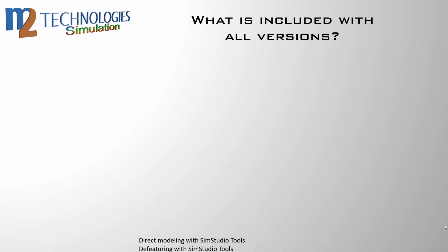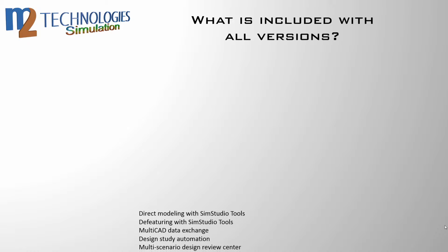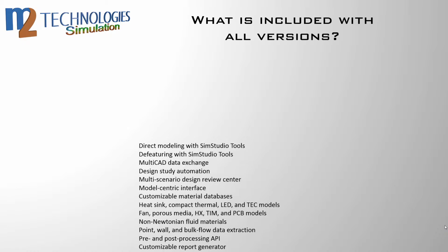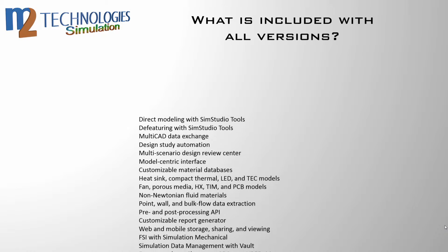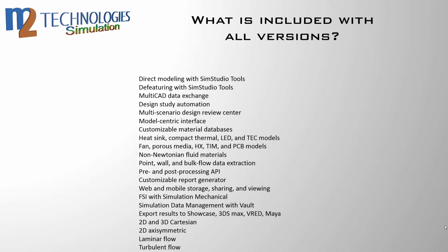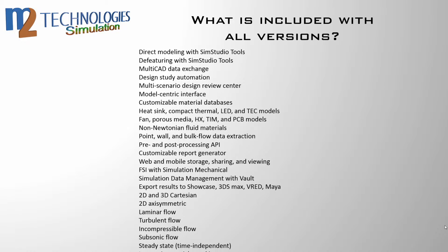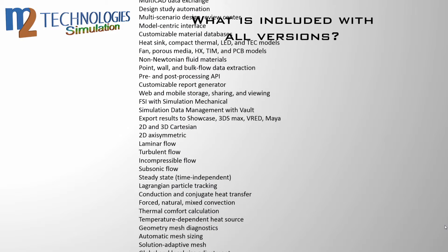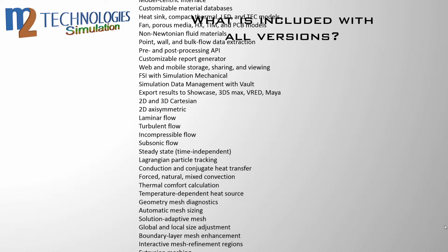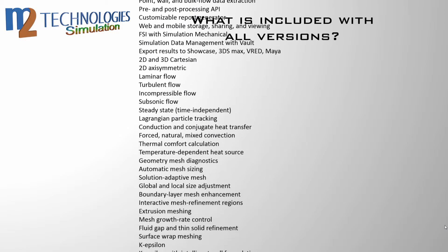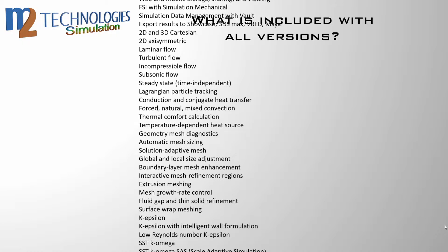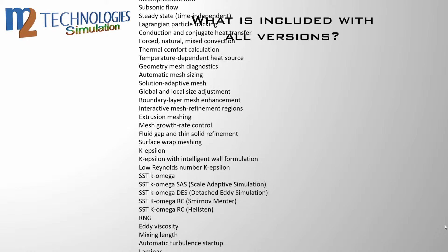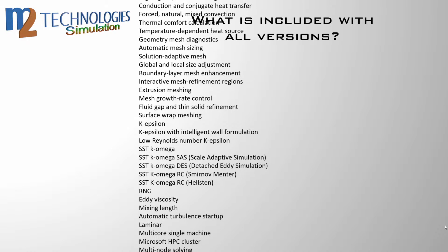What you'll notice if you study the comparison matrix is that most of the features are included in all versions. This document serves as a sales tool, so it's not surprising that the authors wanted to make clear how much the customer is getting for their money, even at the basic level. Most of these items are features of the user interface itself, called the multi-scenario design study environment, which includes geometry tools, meshing, and results interrogation tools. We will not focus on the universal features in this presentation — instead, we will focus on the features that differentiate the higher tiers.